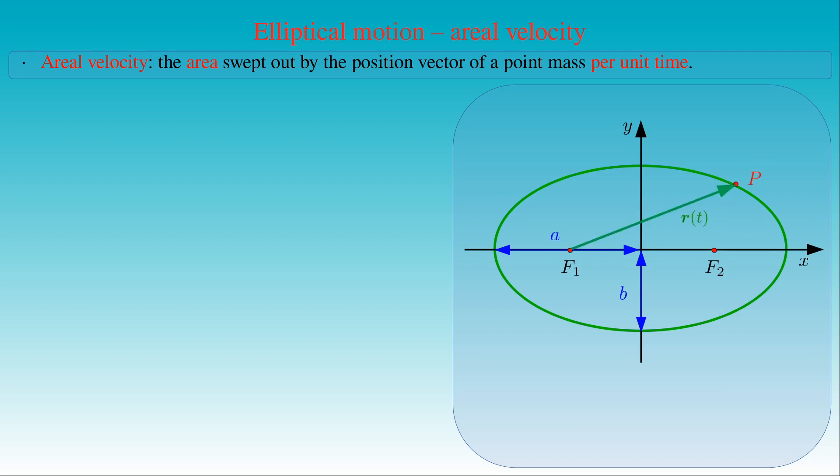Let us choose the fixed point F1 as the reference point of motion. If the instantaneous position of the body is at the point P at time t, then the position vector R(t) of the body points to the location P from the fixed point F1. At the time t plus delta t, the moving point mass reaches the point P'.